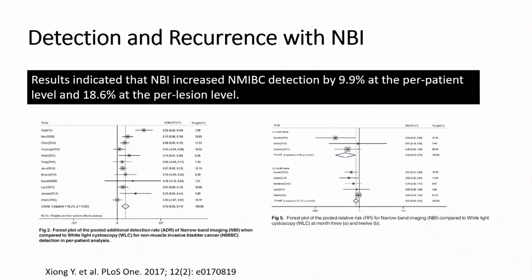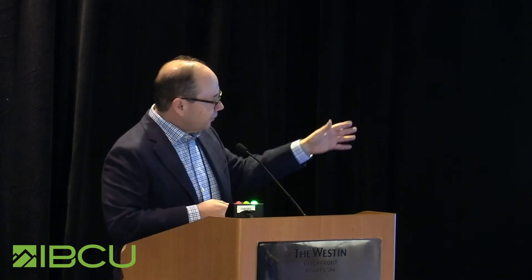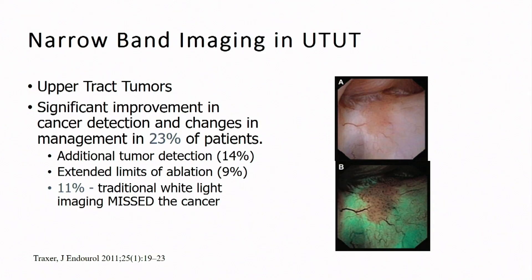The data for narrowband hasn't been as robust as for fluorescent cystoscopy, but when you cobble together meta-analyses, there is significantly increased detection of tumors using narrowband — both per patient and additional lesions — and it does translate into a reduction in recurrence. It can also be used for upper tract tumors, with small series showing up to about 25% of patients benefiting from enhanced detection.